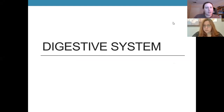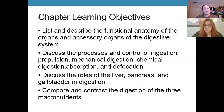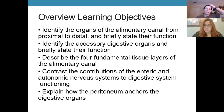We're going to start with an overview of the digestive system — what organs are part of it, how we categorize them, the basic anatomy of the whole system, and the basic functions. Then we're going to work our way through the whole system following the path that things we eat would take, because that makes the most sense.